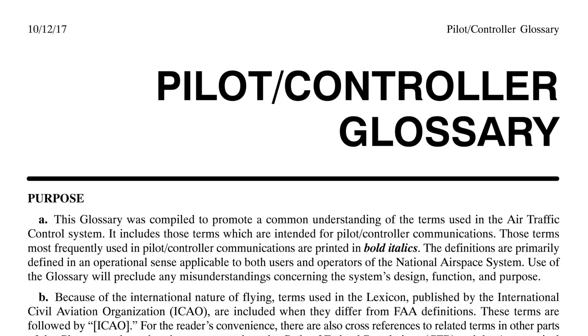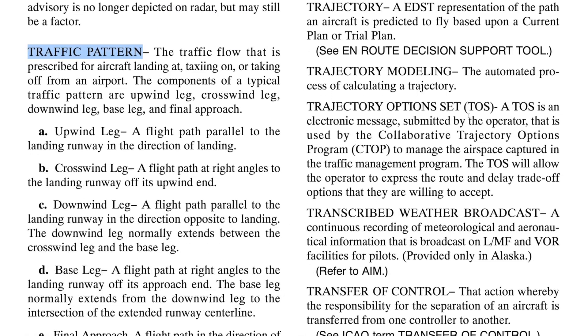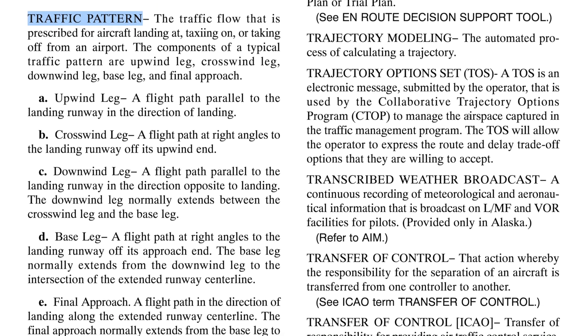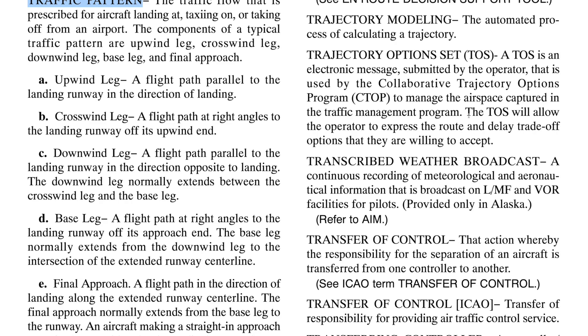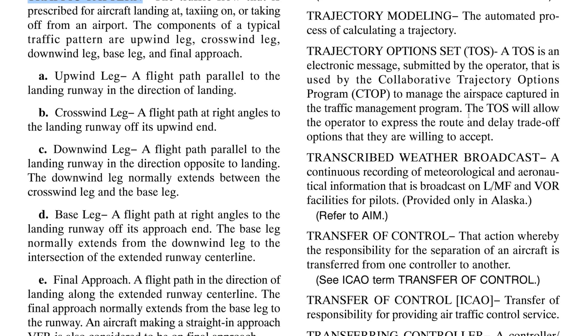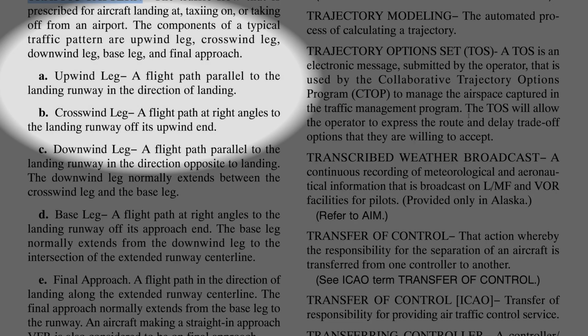The FAA has changed what they say. To make matters even more confusing, the pilot controller glossary kind of punts the conversation — it makes no mention at all of a departure leg. However, it does say that the upwind is parallel to the runway in the direction of landing. And as one of our CFIs pointed out, even a line one inch off of itself can be parallel to that first line. So without specifying how far the offset is, it leaves things ambiguous.